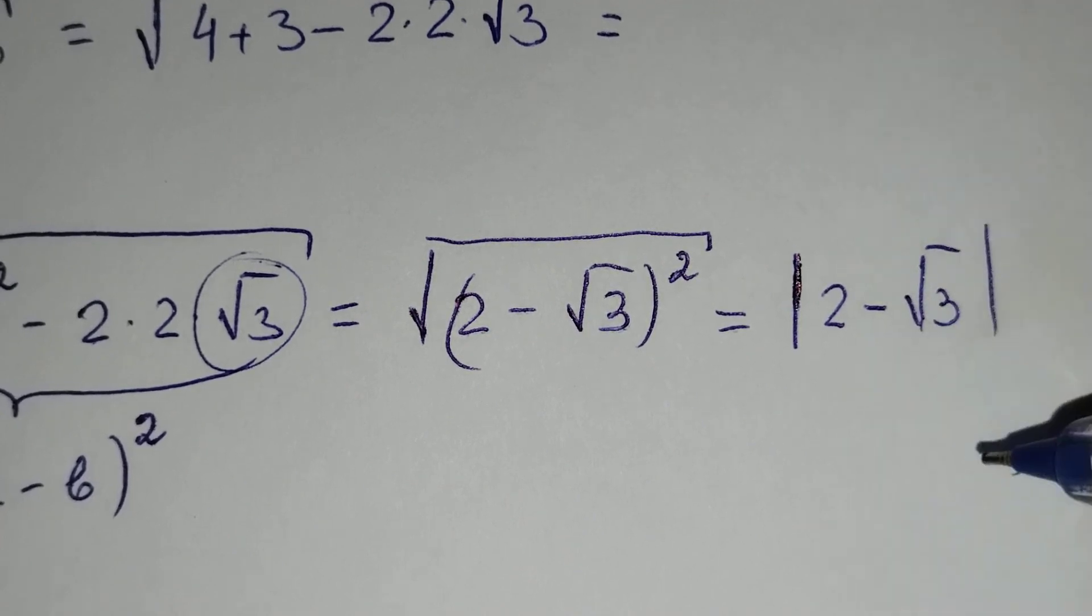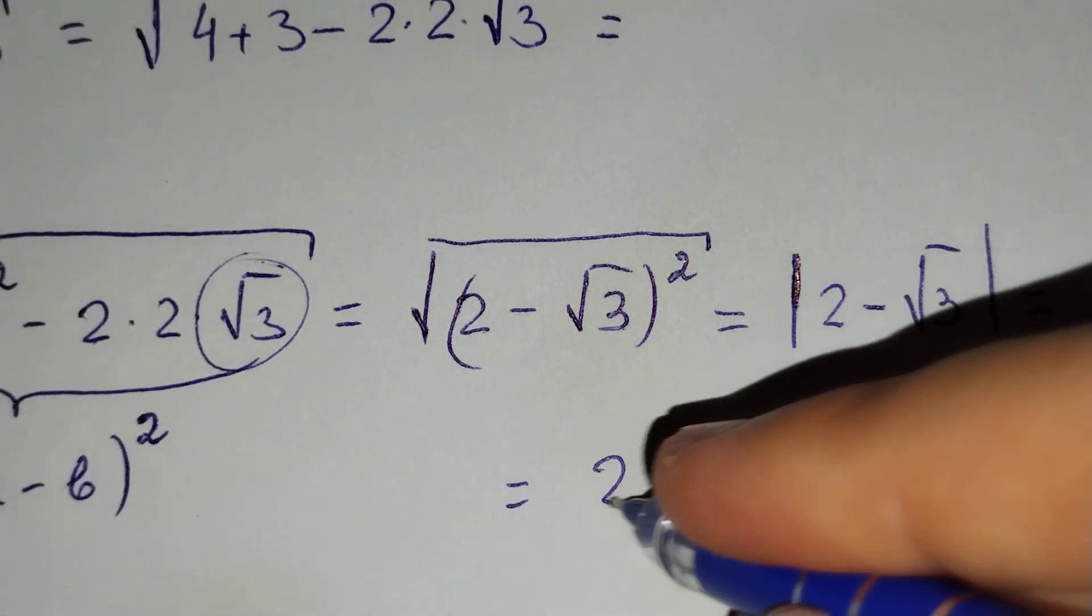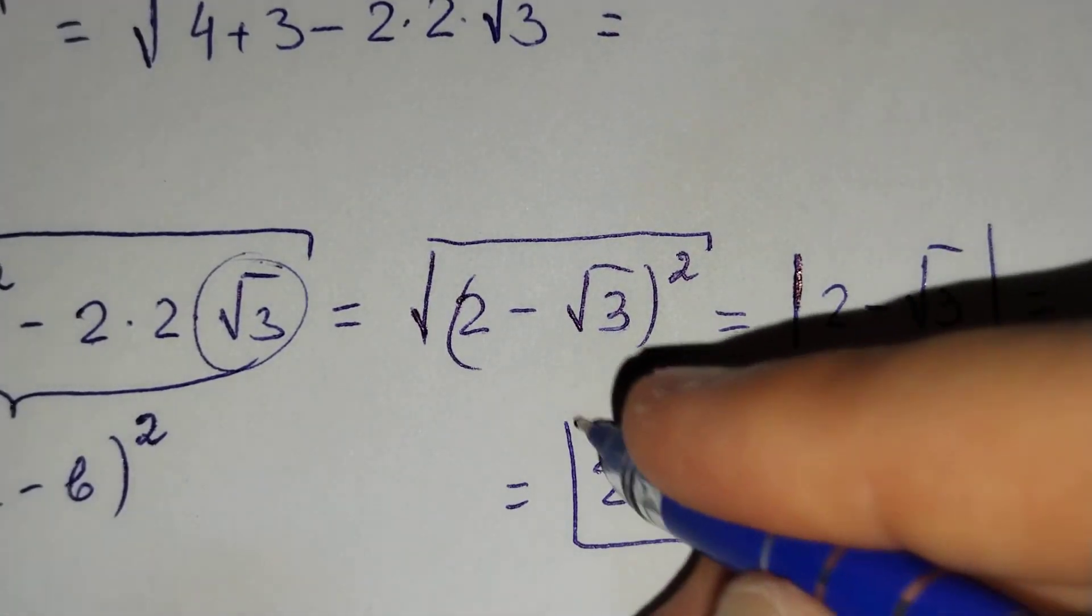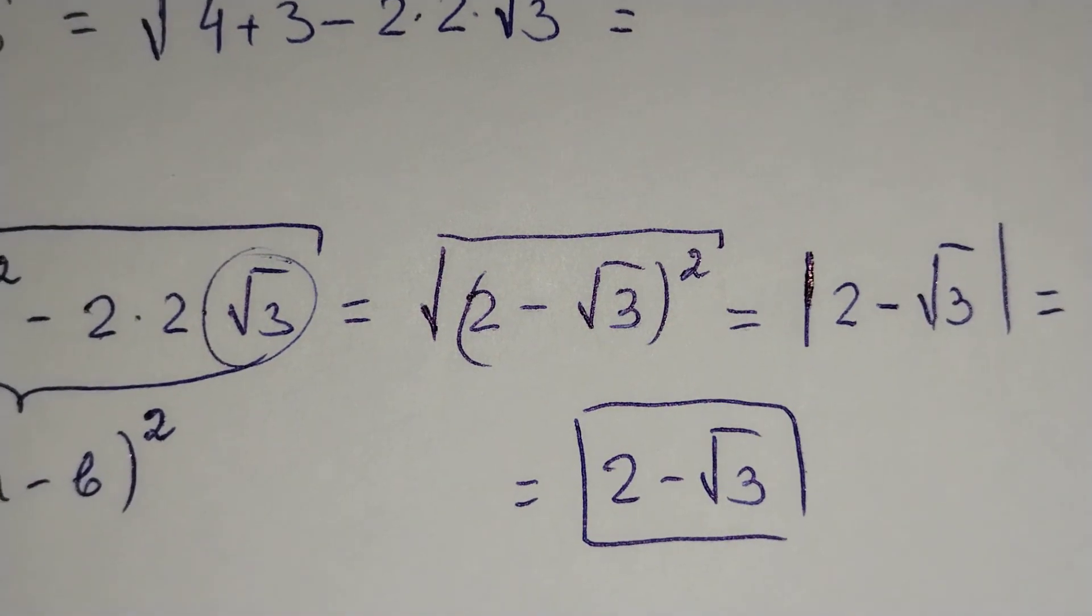We know that this is a positive number. That's why it's equal to 2 minus square root of 3. This is our final answer. Thanks for watching. Don't forget to subscribe to my channel and thumbs up my video.